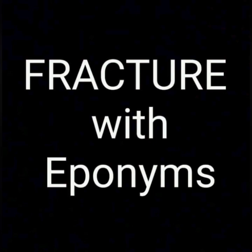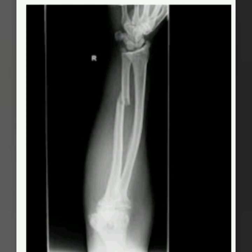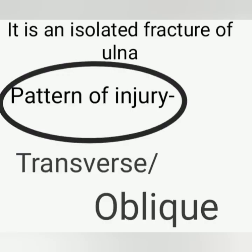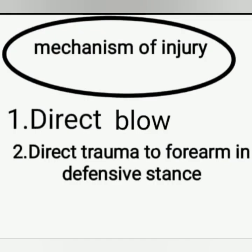So let's get started. Nightstick fracture is an isolated fracture of the ulna — it means only one bone is involved. The fracture pattern is in a transverse or oblique line. The site is in the mid-diaphysis area. The mechanism of injury is a direct blow or direct trauma to the forearm in a defensive stance, if the patient is trying to protect themselves.